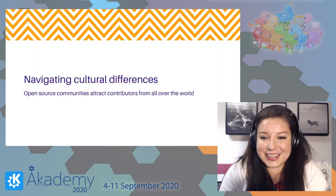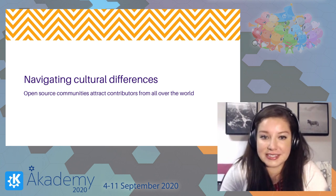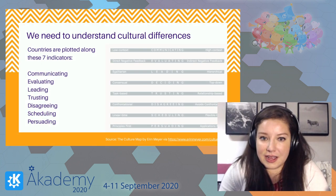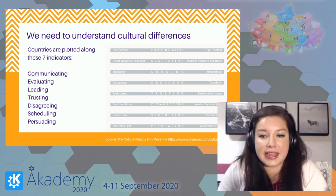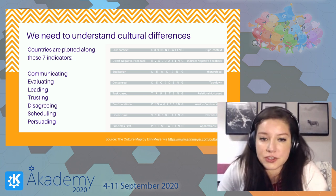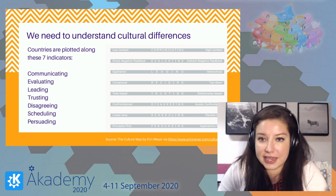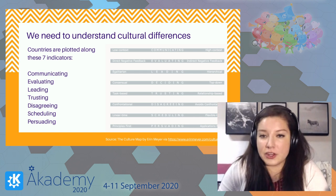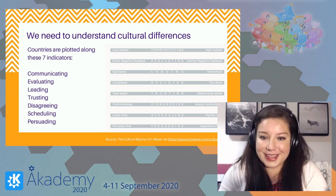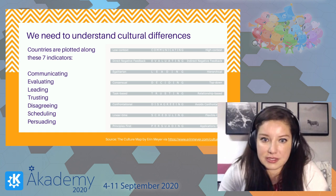The next section is navigating cultural differences, and this is really important as we continue to expand our communities and diversify our contributor base. This section is based off of 'The Culture Map,' written by Erin Meyer. She does research into this topic and has plotted out countries along seven indicators: communicating, evaluating, leading, trusting, disagreeing, scheduling, and persuading. I'll cover a few of these.